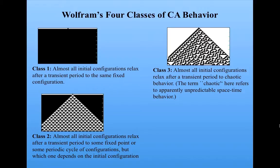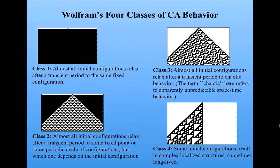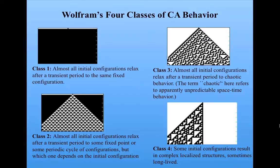And it can be shown to be analogous to the kinds of chaos we saw in the logistic map. More on that a little later. And finally, Class 4: some initial configurations result in complex localized structures, sometimes long-lived.